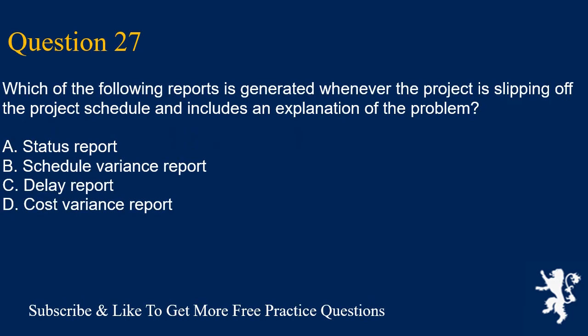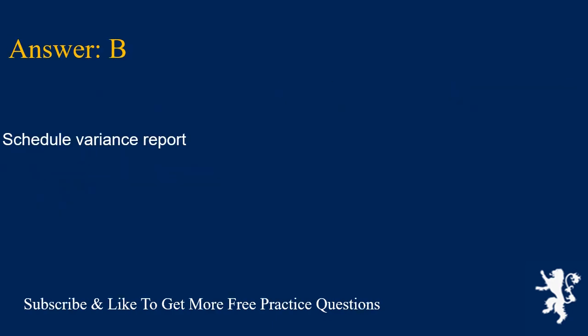Question 27: Which of the following reports is generated whenever the project is slipping off the project schedule and includes an explanation of the problem? A. Status report. B. Schedule variance report. C. Delay report. D. Cost variance report. Answer is B. Schedule variance report.